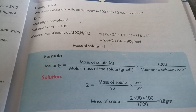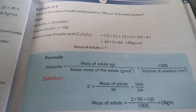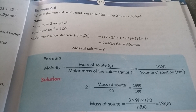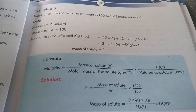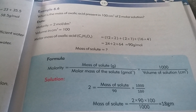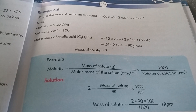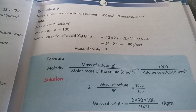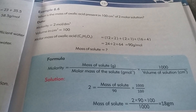First of all, we make the data. In data, we write all the values given in the question. The first value mentioned in the question is molarity, which is 2 molar. We write in the data: molarity is equal to 2 mol per dm³.